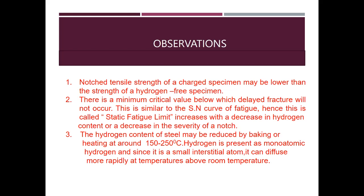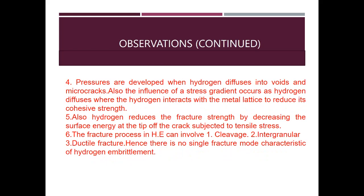The hydrogen content of steel may be reduced by baking or heating at around 150 to 250 degrees centigrade. Hydrogen is present as monoatomic hydrogen, and since it is a small interstitial atom, it can diffuse more rapidly at temperatures above room temperature. Pressures are developed when hydrogen diffuses into voids and micro-cracks.